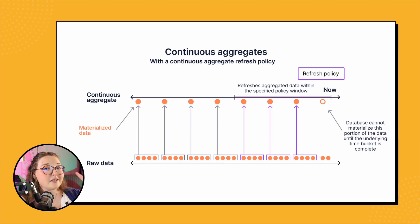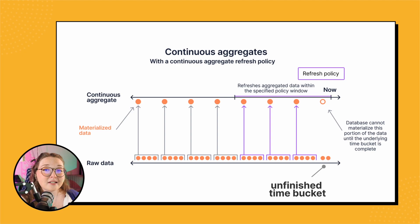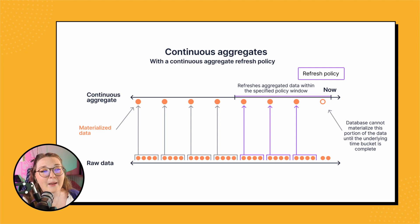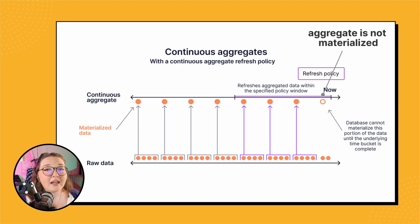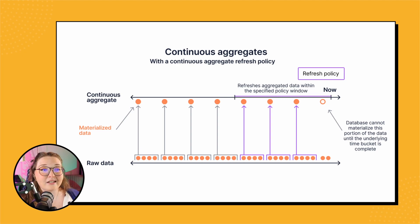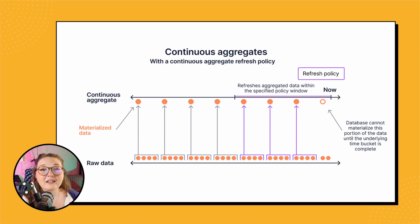I want to note — we mentioned this in the last video — but when you call a refresh policy, if a time bucket is not complete, say it's 7 PM and we call a refresh policy on a daily aggregate, this day is not done. So the data from today that was added will not be materialized in the continuous aggregate until this day is finished and we call the refresh policy again. It really only affects that last time bucket or maybe two, so it should not affect efficiency significantly, but it is good to know.